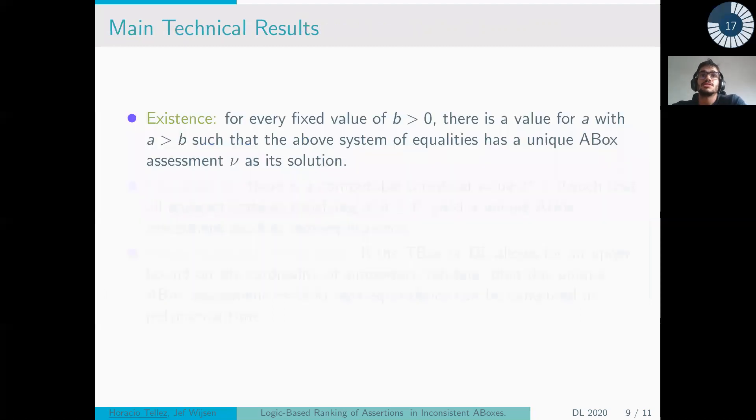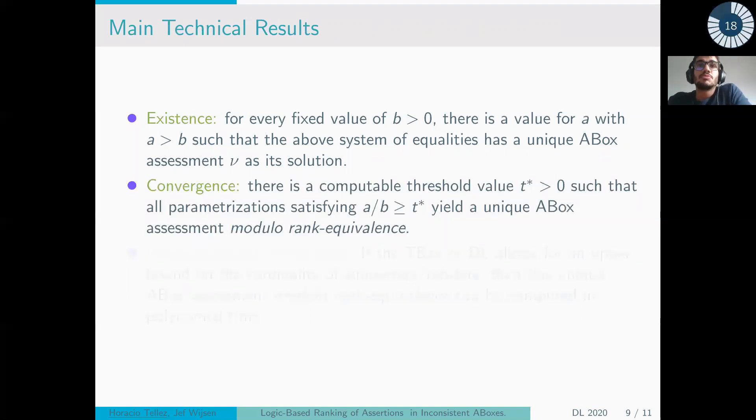Our results: the first is about existence. Whenever you have a fixed value b strictly positive, then we can find a that is greater than b such that the solution for the system of equalities is unique. We have a unique assessment of the A-box. Second, the assessment is stabilized. That is, you can compute the threshold T* strictly positive such that whenever the ratio a/b is greater than T*, the assessments that we found, they are all rank equivalents.